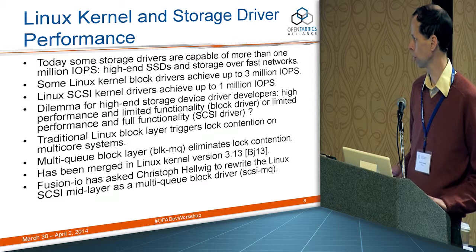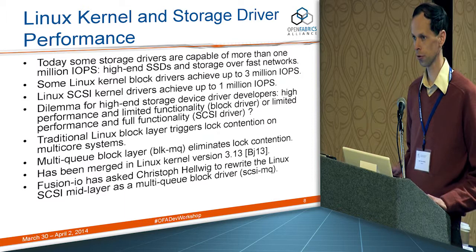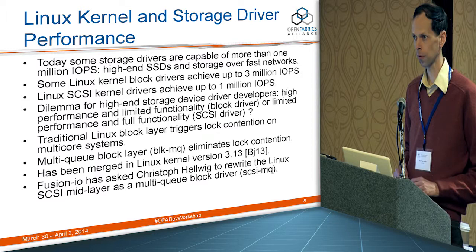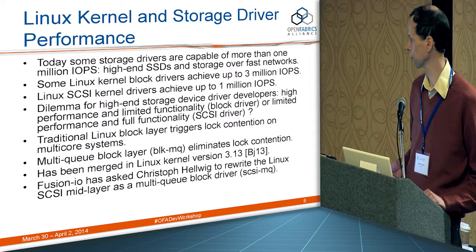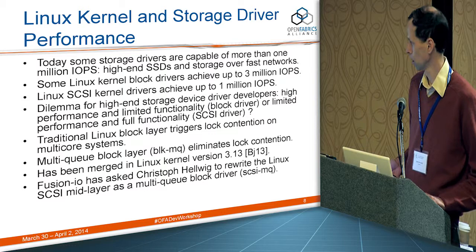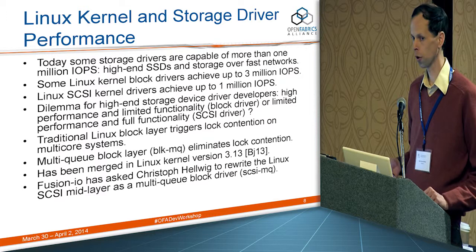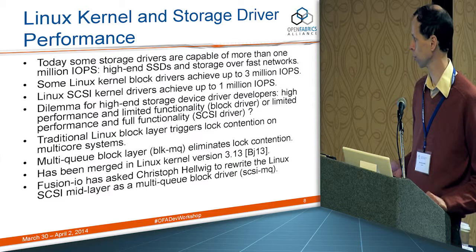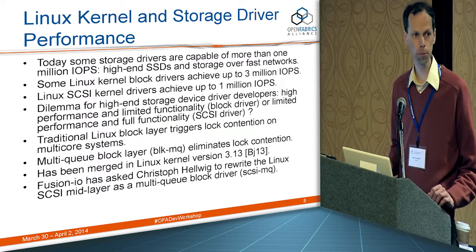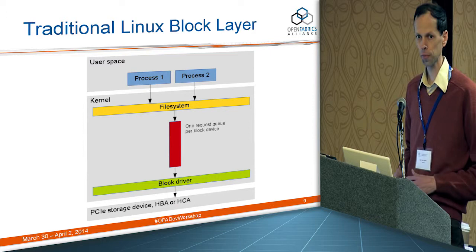About a year ago, the block layer maintainer Jens Axboe started working on optimizing the block layer further — hence the multi-queue block layer project, abbreviated as BlockMQ. It's a re-implementation of the block layer that eliminates lock contention. It was merged recently in Linux kernel version 3.13, around the end of last year. The next step is to use the same approach in the Linux SCSI core — that's the SCSI multi-queue project. Fusion.io has asked Christoph Helwig, a well-known kernel developer, to work on that.